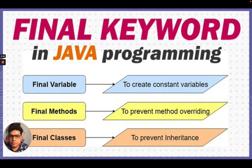So final can be used with variable, final can also be used with method and final can be used with classes. Final variable, if we'll use final with a variable, it acts as a kind of constant, it means the values cannot be changed. If it is used with method, it prevents method from overriding and if it is used with class, it prevents inheritance.